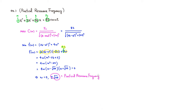This ω minimizes the denominator function f(ω), and the smallest denominator gives the largest fraction. So this ω maximizes C(ω), giving the largest possible amplitude for the steady periodic solution. That's it — I hope that was clear.